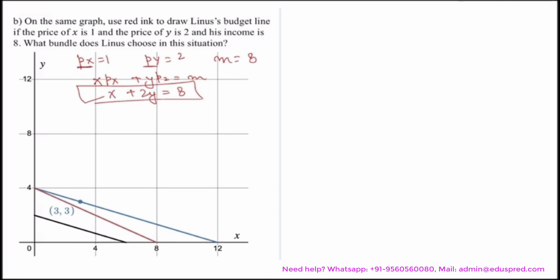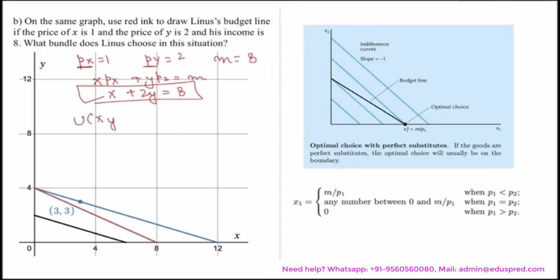The question now asks what bundle Linus chooses. The utility function u(x, y) = x + 3y is the equation of a straight line, which means this is a case of perfect substitutes.